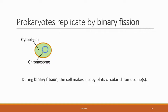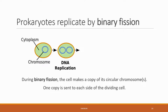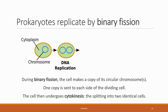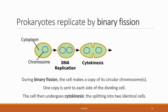Prokaryotes replicate through a method called binary fission. The circular chromosomes must be replicated and localized to different sides of the cell. In this process, one parental cell produces two nearly identical cells. Part of the process where the components of cells divide into two is called cytokinesis.